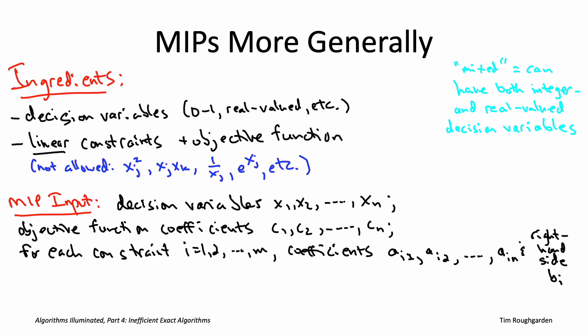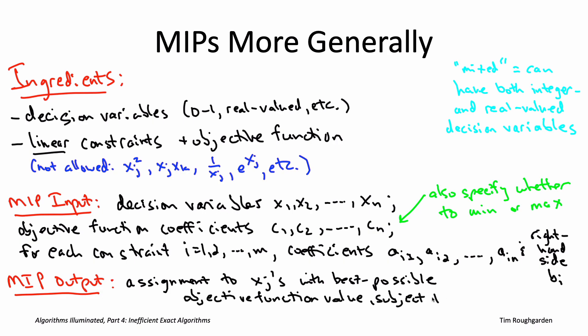The responsibility of a MIP algorithm, of a MIP solver, is then just to compute an optimal solution to this very general optimization problem. Among all of the allowable ways to assign values to the decision variables, among all the ways that can respect all of the given constraints, you want to find the one with the best objective function value.